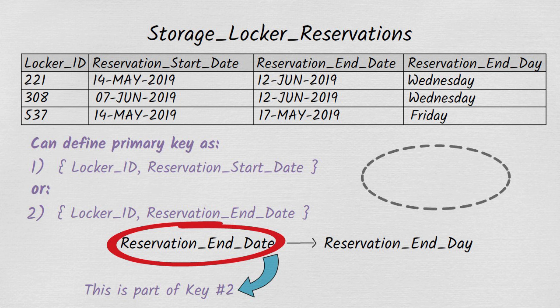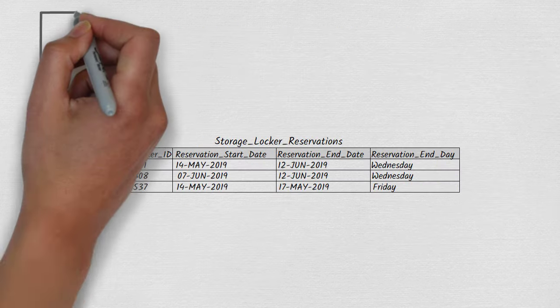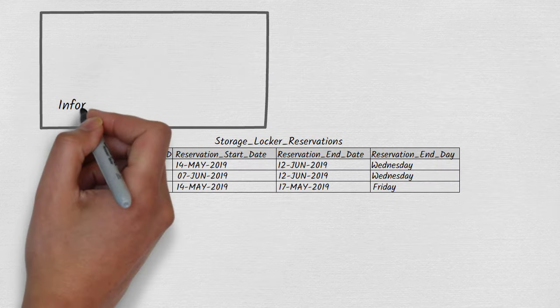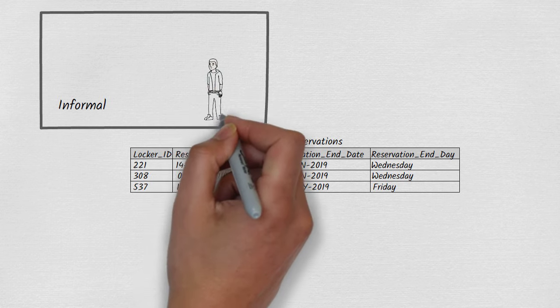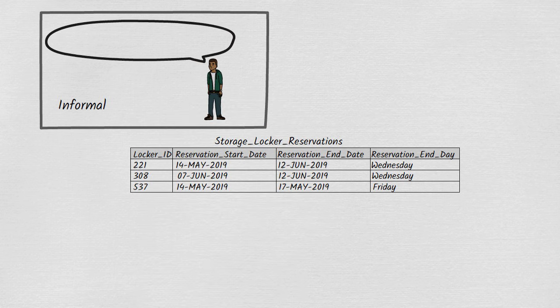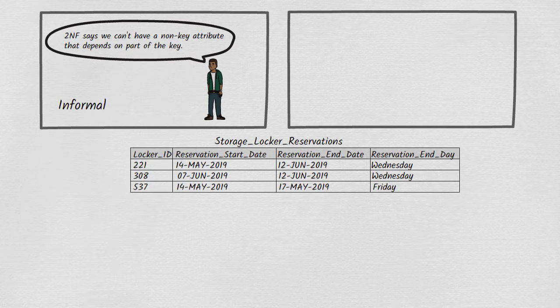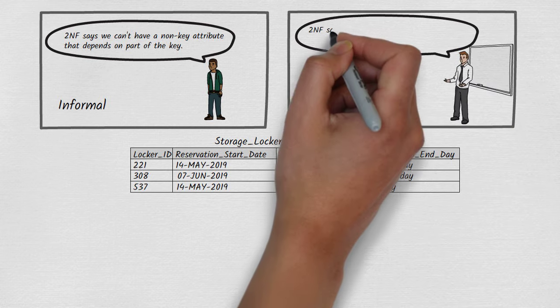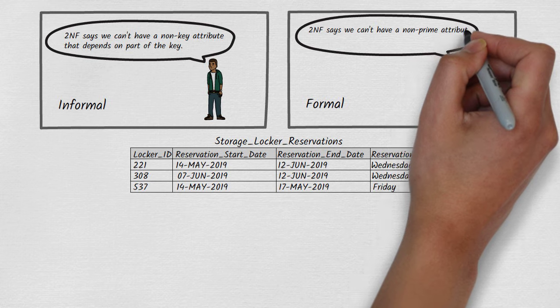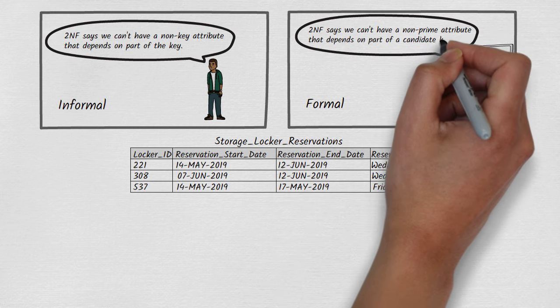In truth, it isn't in second normal form, and the reasons are grounded in the formal definition — not the informal definition, but the rigorous one. Informally, we understand second normal form to say that a table isn't allowed to have a non-prime attribute that depends on part of the key. But formally, the definition says a table isn't allowed to have a non-prime attribute that depends on part of a candidate key.